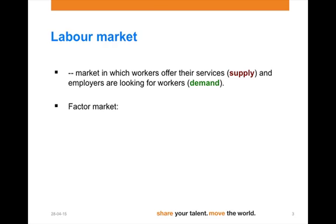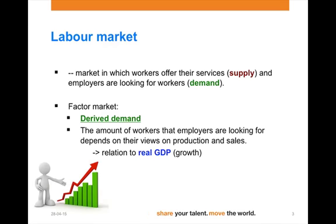For any factor market — whether it's labor, capital, or for that matter land — we are talking about a derived demand. If the output in an economy increases, the demand for labor or the demand for capital, think in machines, buildings, etc., will increase. If the economy is slowing down, the demand for these factor markets will fall. So for the labor market this means that the amount of workers employers are looking for depends on their views on production and sales. So if GDP grows you may expect an increase in demand on the labor market.